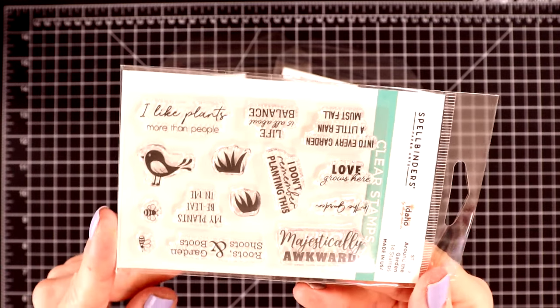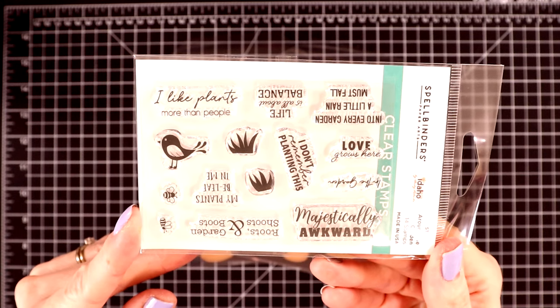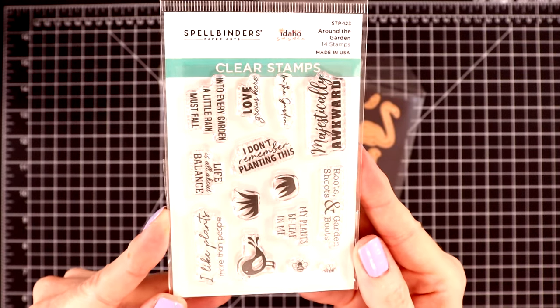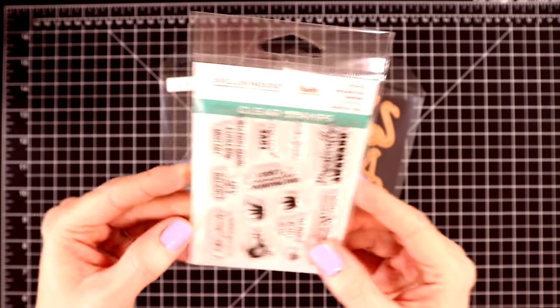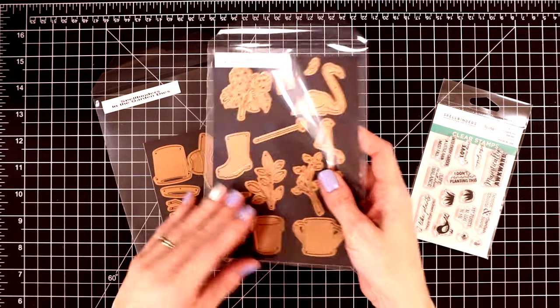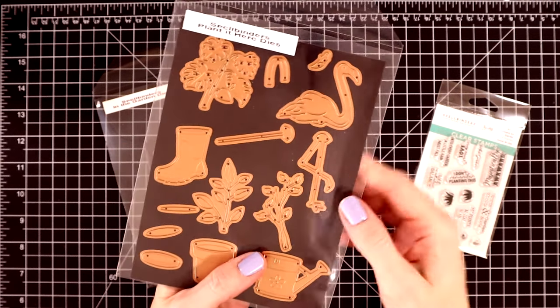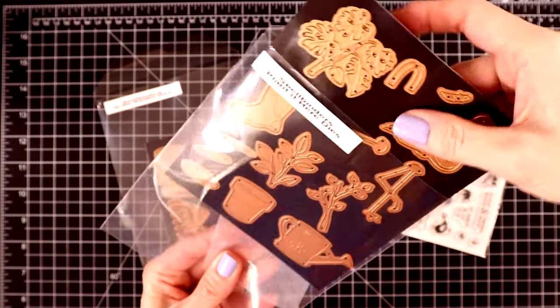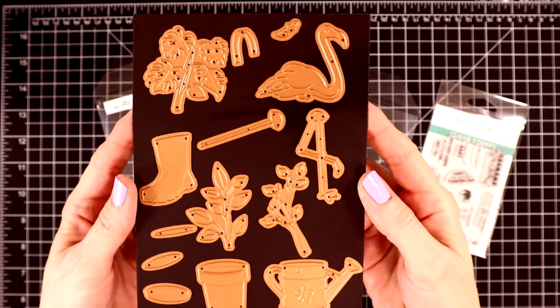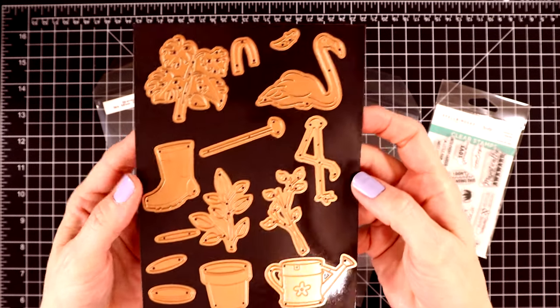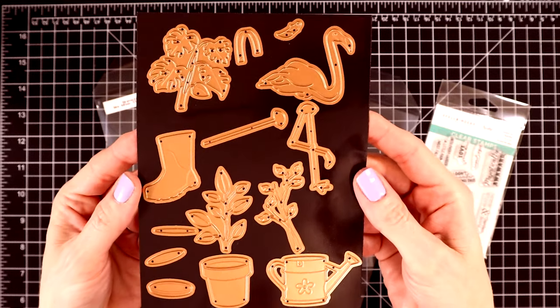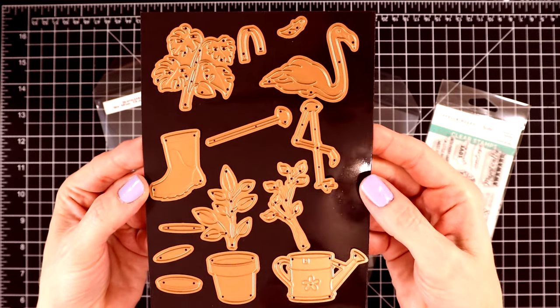The stamp set is called Around the Garden. It includes a bunch of cute and quirky sentiments. They are on the smaller size and it kind of surprised me when I got these, but I'm going to show you how to use them on your cards. Next up I have a die set and this one is called Plant It Here. This set is so much fun. It has a bunch of different planters and plants and even a garden flamingo, and I really love that little rain boot that you can plant different plants in.